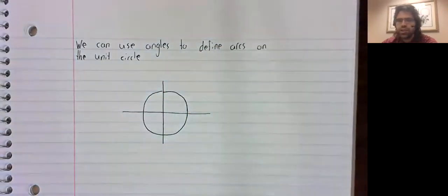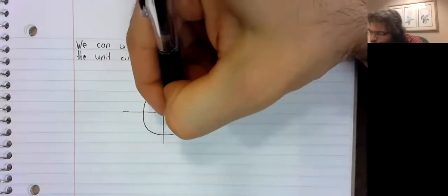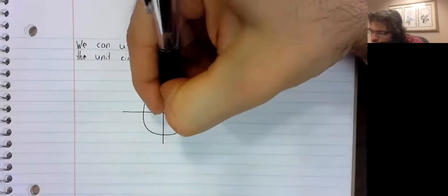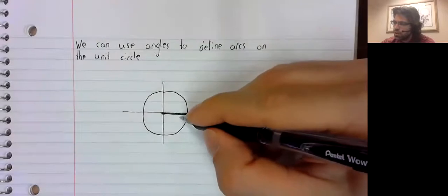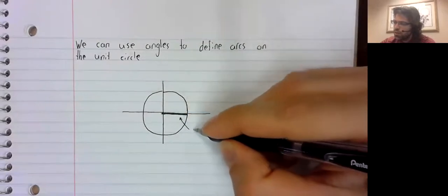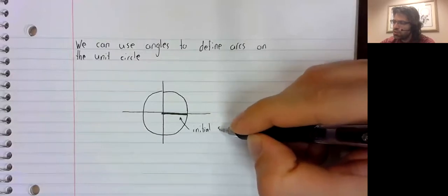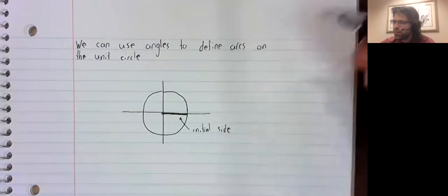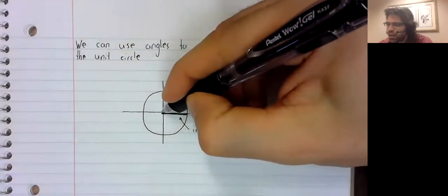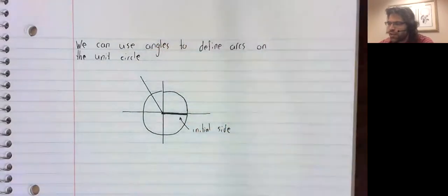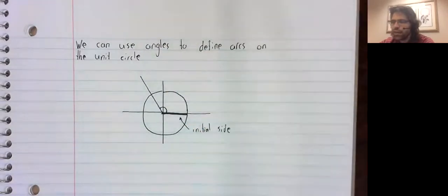And let's draw an angle. The x-axis will be the initial side of the angle, and then we've got another line segment forming an angle.